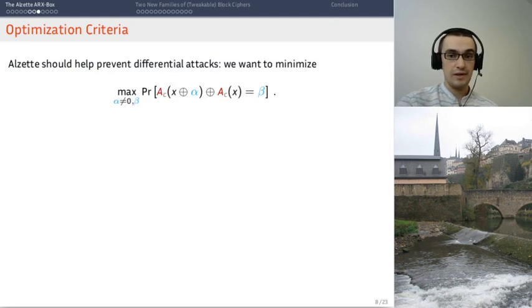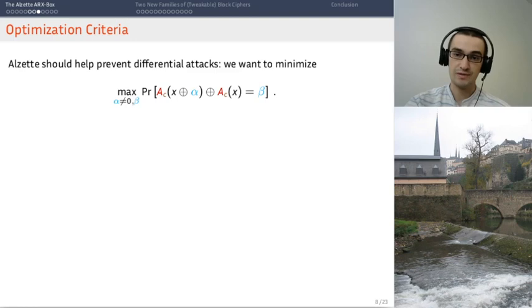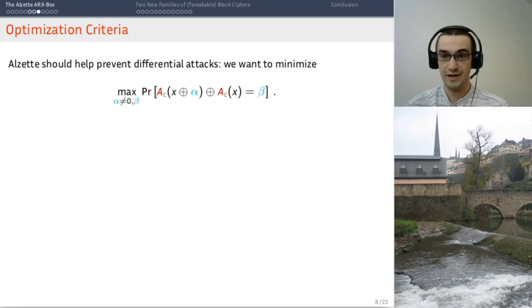Of course, we are going to want to pick the best constants and rotation amounts. And to pick the best, it means that we have an optimization problem and then we need to have criteria to optimize for. So one of them is that ALZET has to help prevent differential attacks. So this is the quantity we need to optimize in this context.